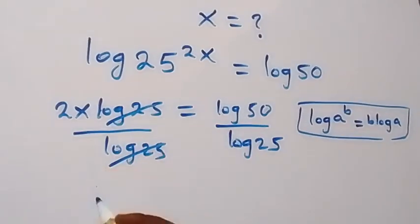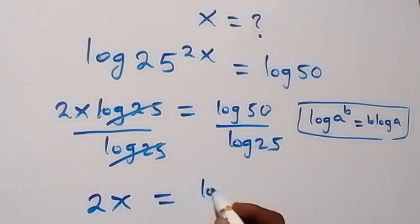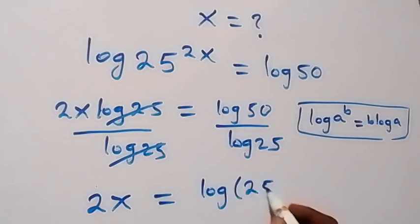We are left with 2x on this side which equals log 50. Let's write it as log 25 times 2, over log 25.